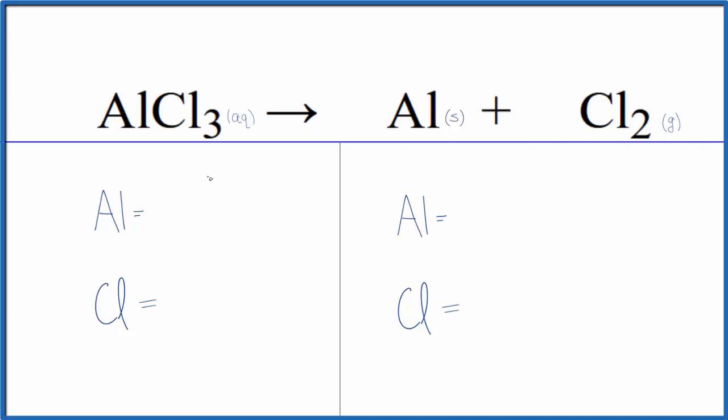To balance the equation, let's count the atoms up. We have one aluminum and then three chlorine atoms. Product side, one aluminum and two chlorine atoms.